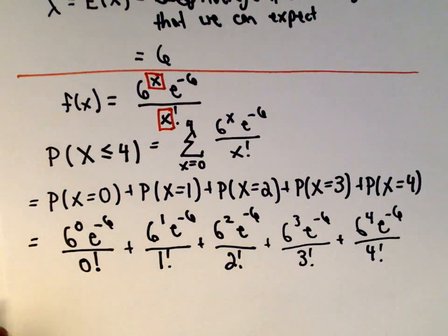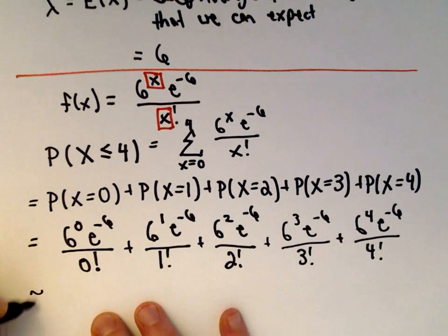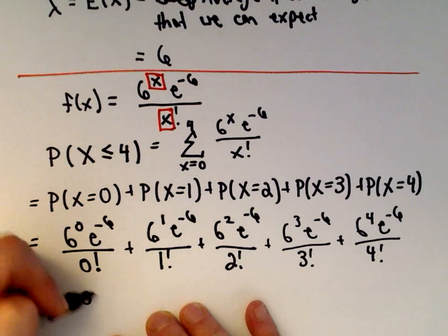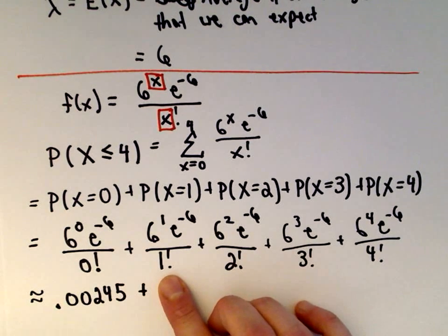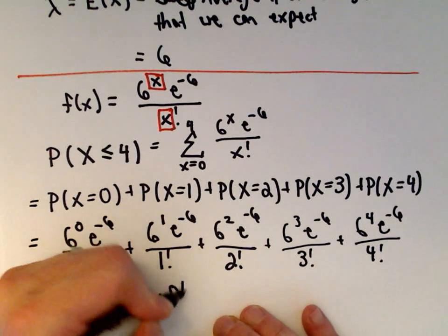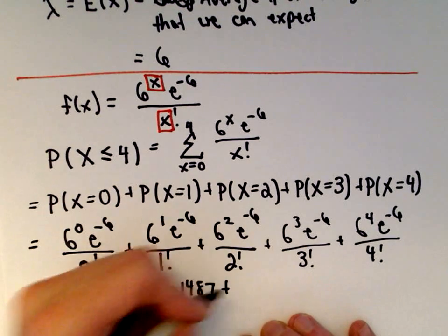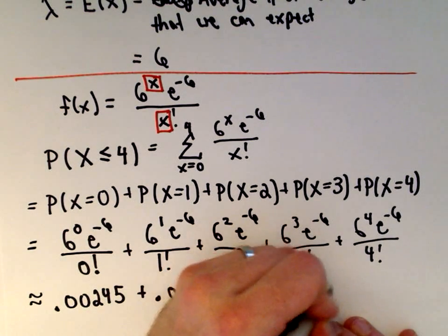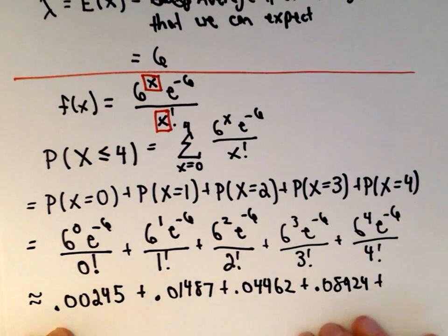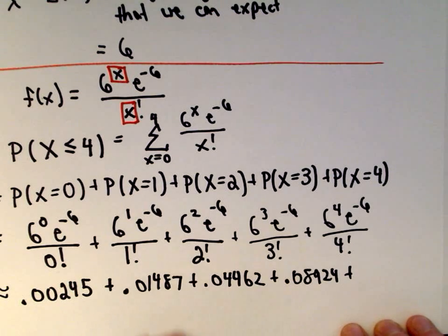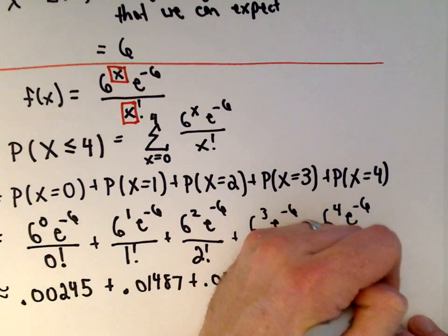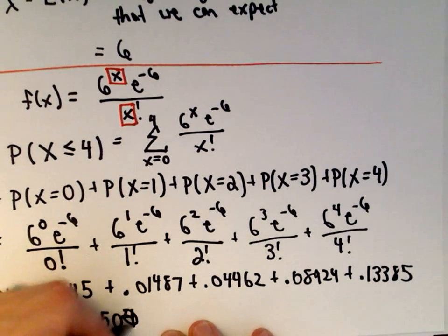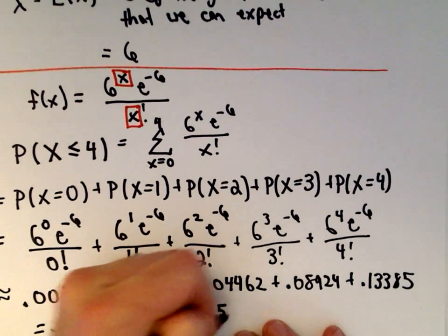I grabbed a calculator since I don't know e^(−6) by hand, and approximated to five decimal places. The terms are: 0.00245, 0.01487, 0.04462, 0.08924, and 0.13385. Adding all of those up gives 0.28503.